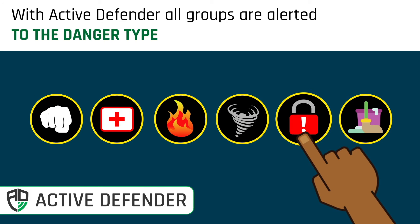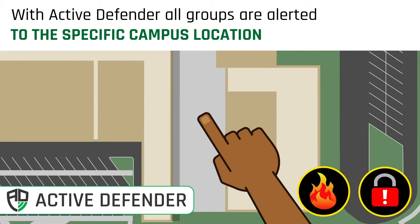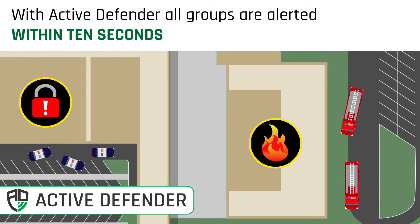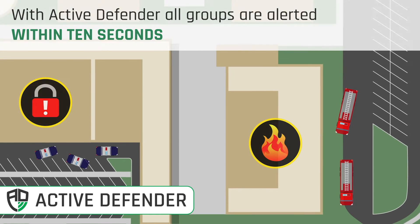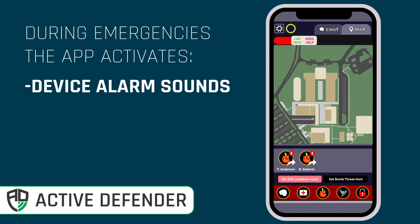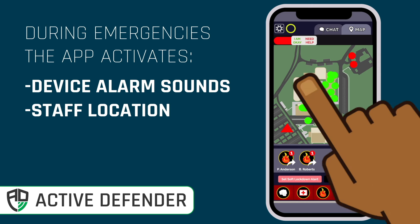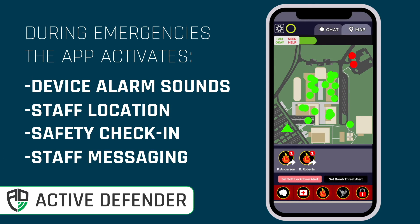What's happening? Where is it happening? What should we do? And how close is help? Active Defender ensures immediate awareness of any incident or serious threat to all appropriate team members. Emergencies become more manageable when you know where and what they are and how to respond instantly.